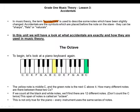How many different notes are there between these two C's? If we count all the black and white notes, we'll find there are 12 different notes. Don't count the C twice. This span of notes is called an octave.